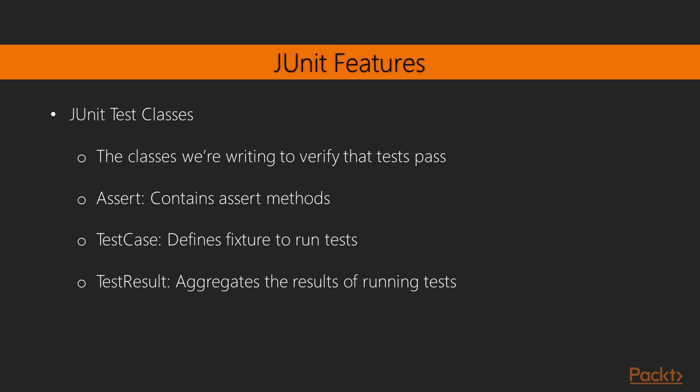Then we finally have the JUnit test classes where we are writing our tests. This is where we're saying we want to verify that our tests pass. An assert is going to be important here because an assert is where we say this is what we expect to be true — for example, an expected value equals an actual value, or a Boolean value is true, or an object is null, or an object is not null.